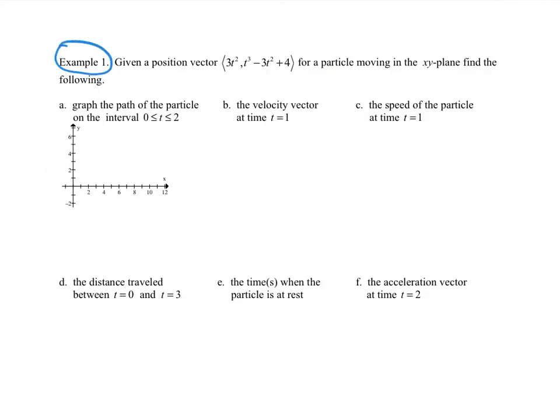So example number one. We're going to give you a vector that's defined for x and for y of t. For this particle moving in the xy plane, find the following. This is a lot like our parametric equations, very similar. For part a, graph the path of the particle on the interval from zero to two. If I plug in zero for both the x and the y, I'm going to get zero four. If I plug in one, I'm going to get the point three two. And if I plug in two, I see a 12 and a zero. So I'm going to start here and go to here, and then there's my direction, starting point and my direction.